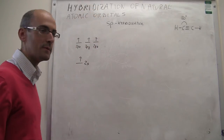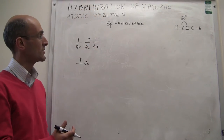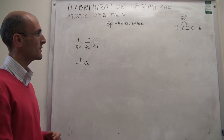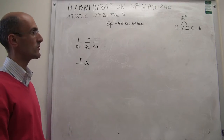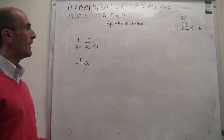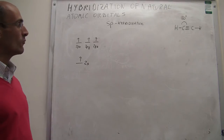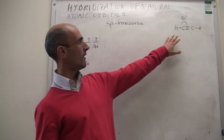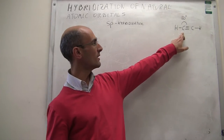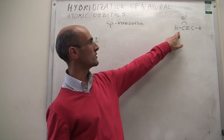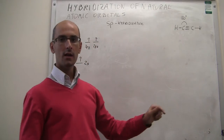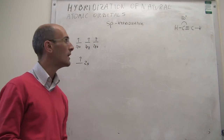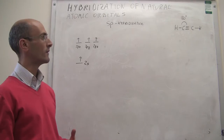We're going to wrap up this discussion of hybridization by talking about the last hybridization I want to introduce: sp hybridization. We're going to use that to explain bonding environments in which carbon is forming two connections, and those connections form an angle of 180 degrees.